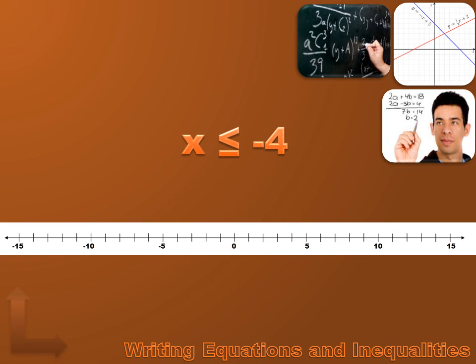For x is less than or equal to minus 4, we have a closed circle over minus 4 and run an arrow to the left towards the smaller numbers. That means x is less than or equal to minus 4.